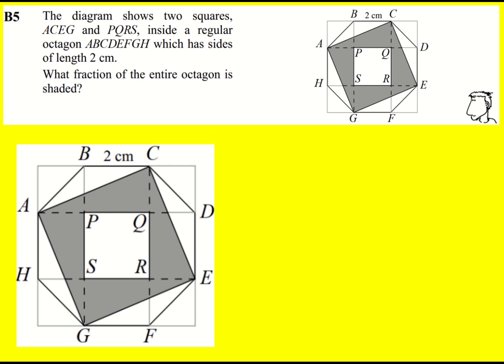So I'm first of all going to focus on just one triangle on the octagon. In fact, I'm going to draw it away from the octagon over here. Now this will have a side length of 2 because it's a regular octagon. All the sides are 2.